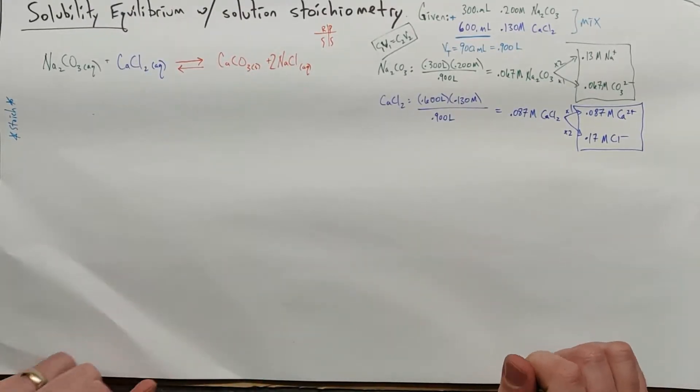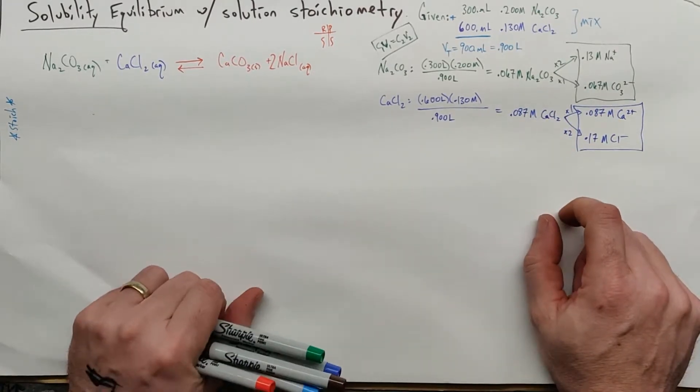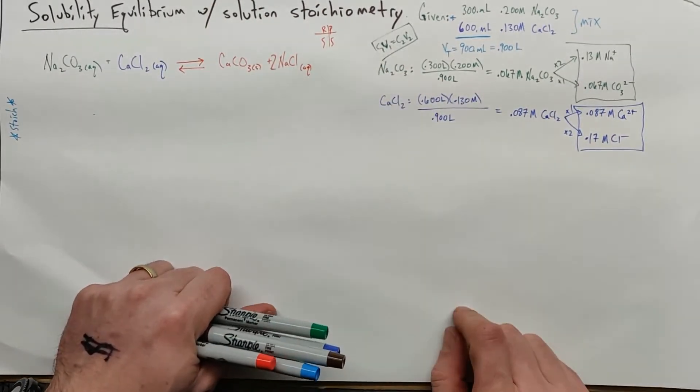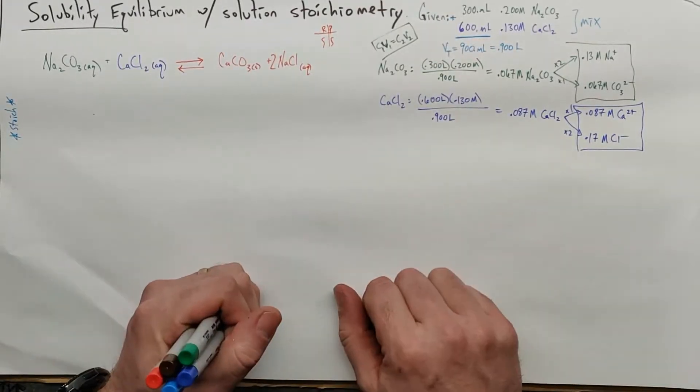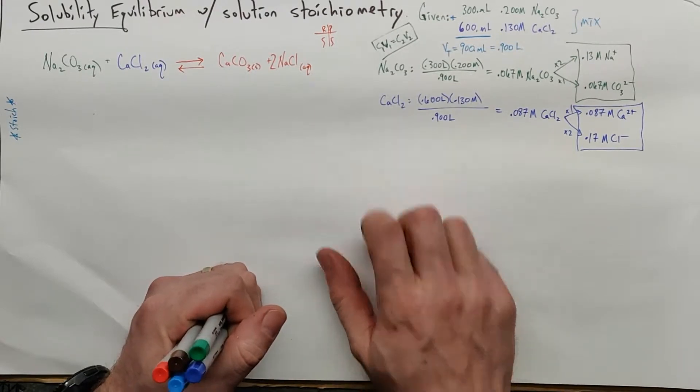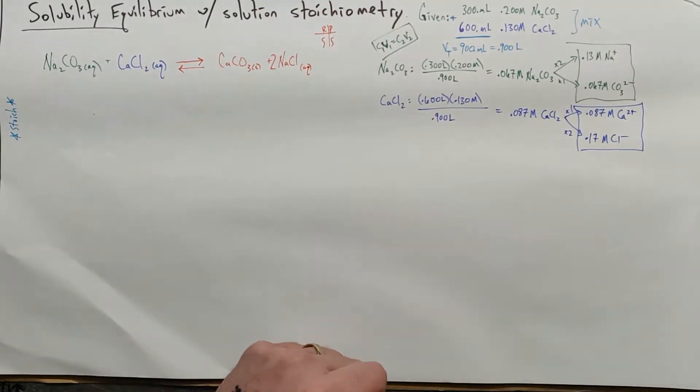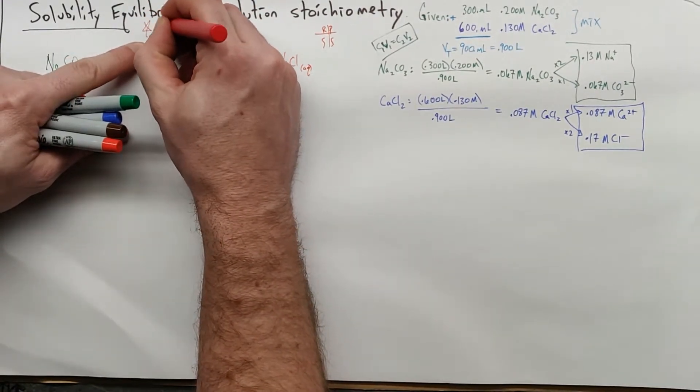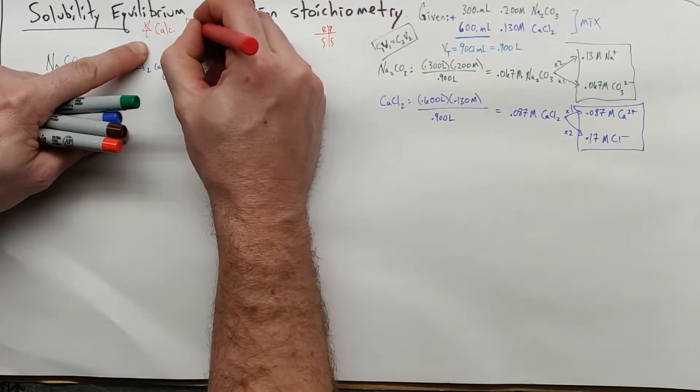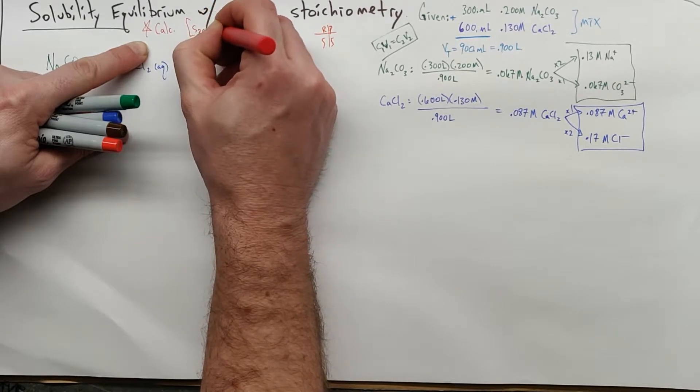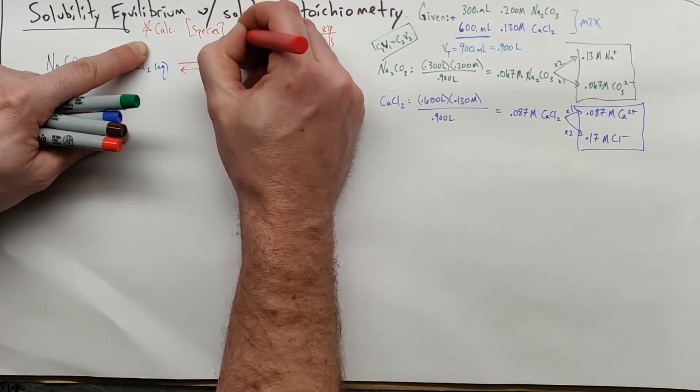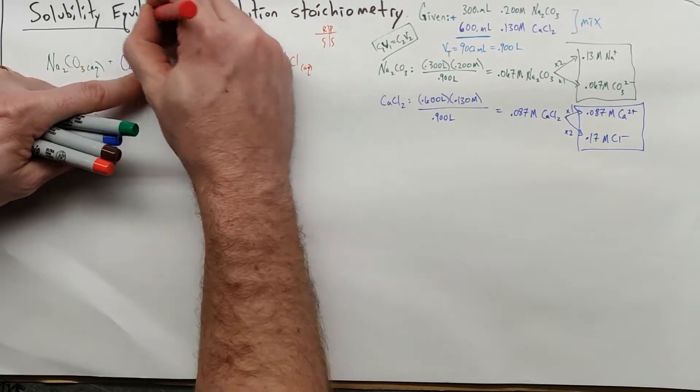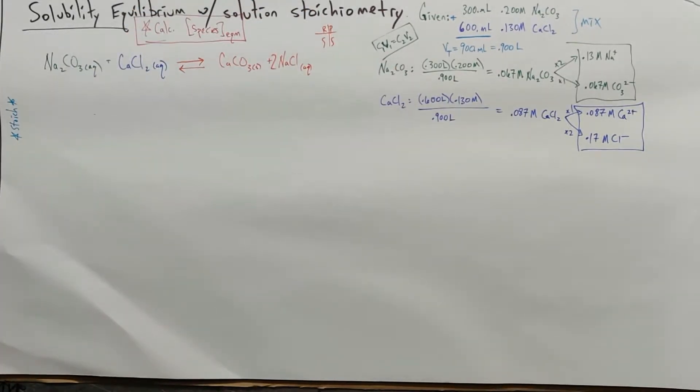It turns out I cut a corner here in a very convenient way, because in this problem I want us to calculate the concentration of all species in the final solution. Calculate the concentration of all species at equilibrium. That is our goal in this problem.